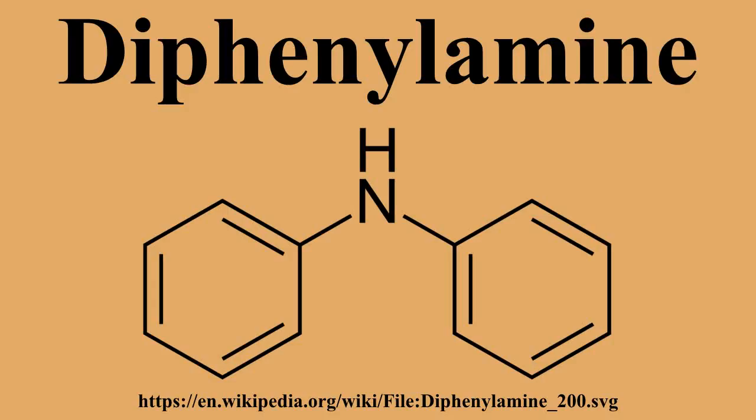It is used mainly for its antioxidant properties. Diphenylamine is manufactured by the thermal deamination of aniline over oxide catalysts: 2C6H5NH2 → (C6H5)2NH + NH3. It is a weak base with a Kb of 10⁻¹⁴.